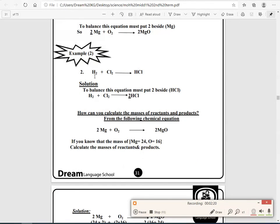The next example, we have H2 plus Cl2 will give us HCl. To balance this equation, we will count first: 2H, 2Cl, 1H, 1Cl. So we will write 2 beside HCl to give 2HCl.